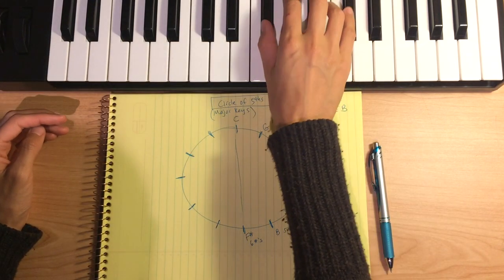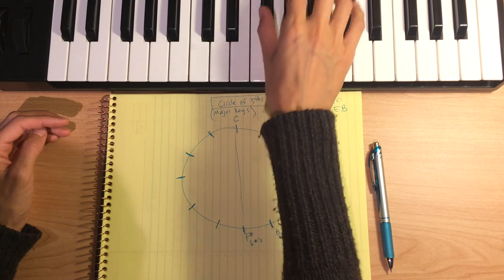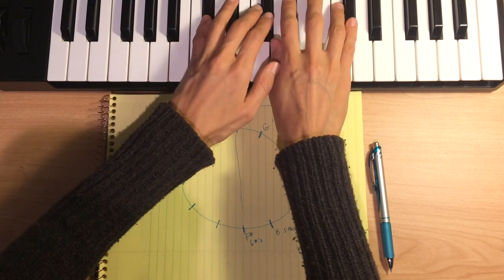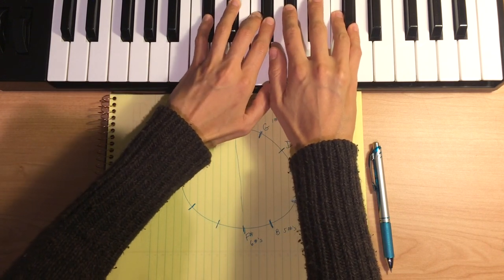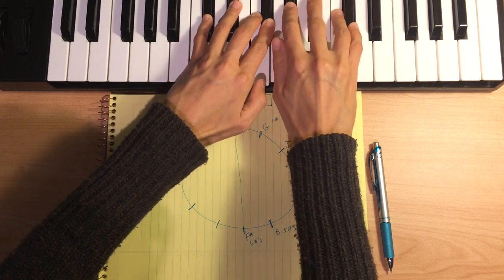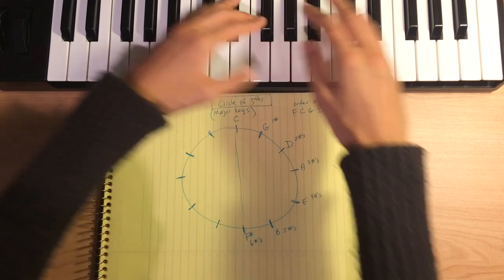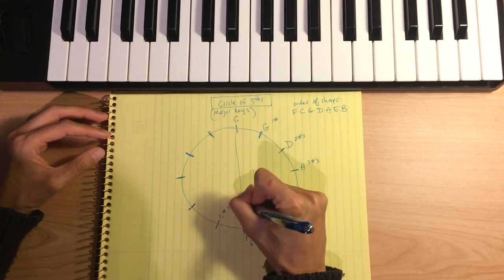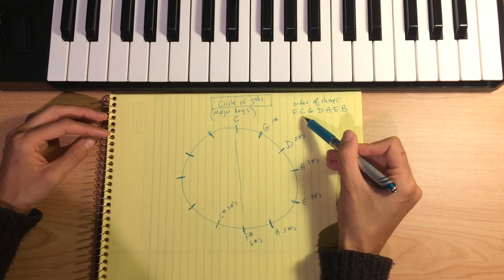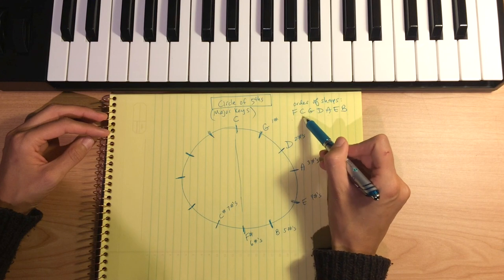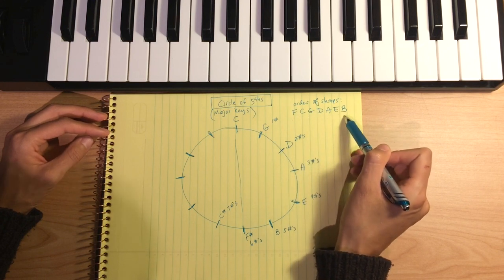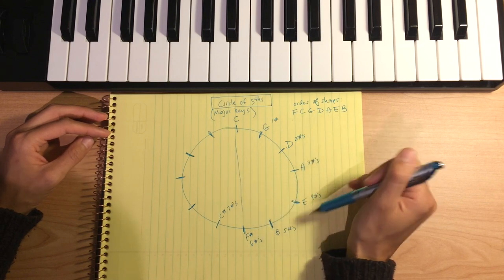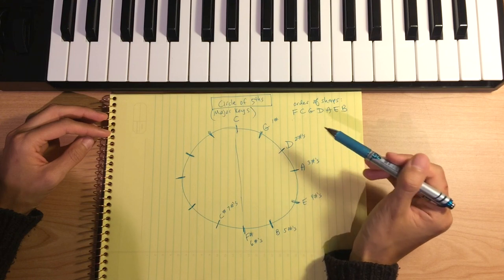The scale that has seven sharps is C sharp. Starting from F sharp and going up a fifth, we land on C sharp. C sharp has all seven notes sharped: C sharp, D sharp, E sharp, F sharp, G sharp, A sharp, B sharp — then we return back to C sharp. Fat cats go down alleys eating bacon: F sharp, C sharp, G sharp, D sharp, A sharp, E sharp, B sharp. As you add more sharps it can get trickier because you have to make sure those notes are sharpened.